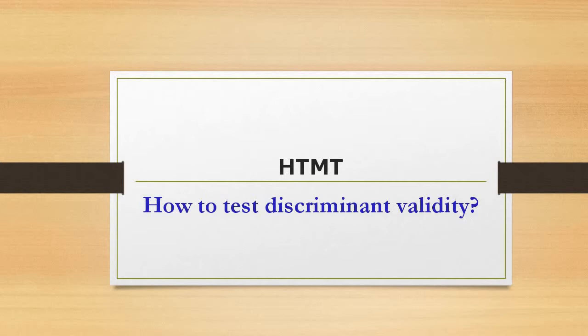HTMT is a test which is used to assess discriminant validity of any model. SmartPLS3 does have a provision for calculating HTMT, whereas SmartPLS2 does not have a provision for it. HTMT is used to assess discriminant validity in case of variance-based SEM.